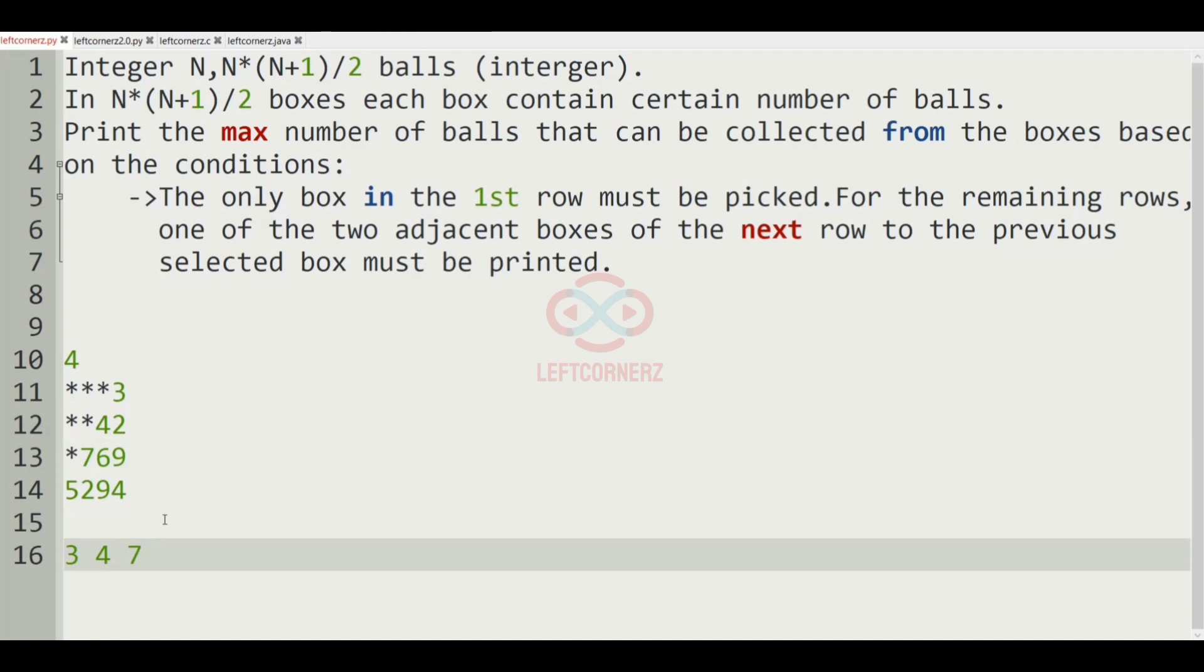And after that we have five. So now, 3 plus 4 plus 7 plus 5 gives 17. Now we'll find the other way, that is 3 plus 4 plus 7 plus 2, because it is near five. And 3 plus 4 plus 7 plus 2 gives 16.